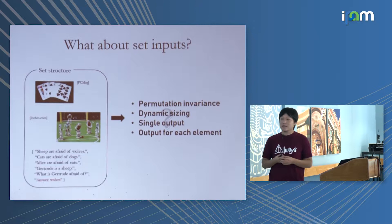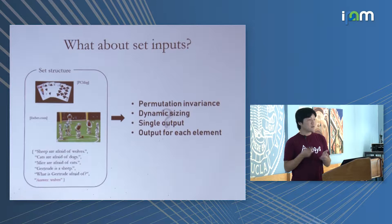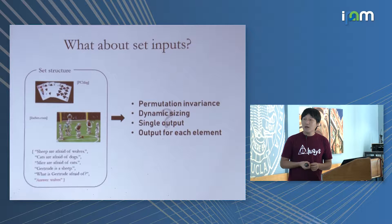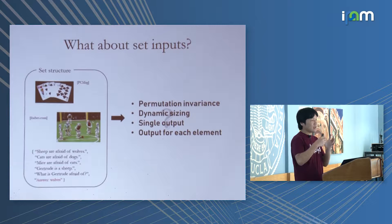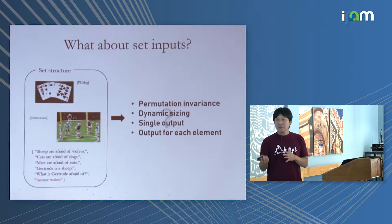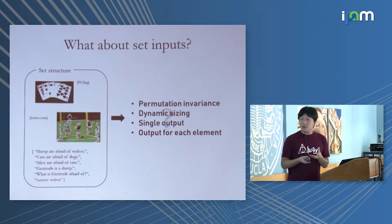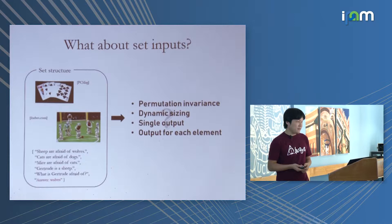Now we do. The key properties we want for sets are: permutation invariance — very important, unlike sequences, shuffling the elements should give the same output — and dynamic sizing, so the model can handle sets of size 4, 5, and so on. The output can be a single value from the set, or one output per element.